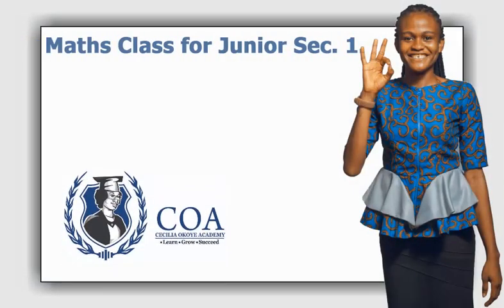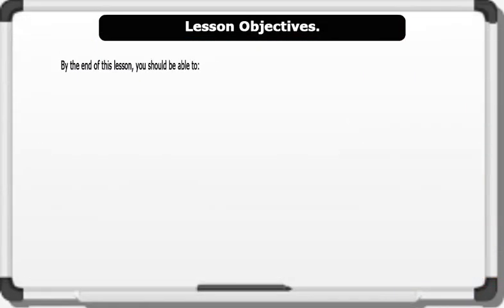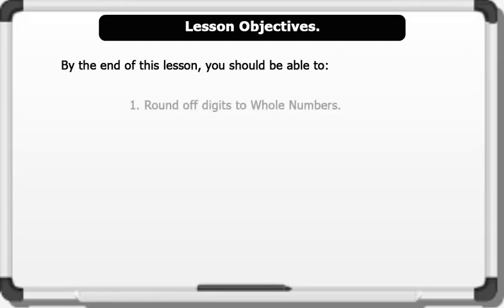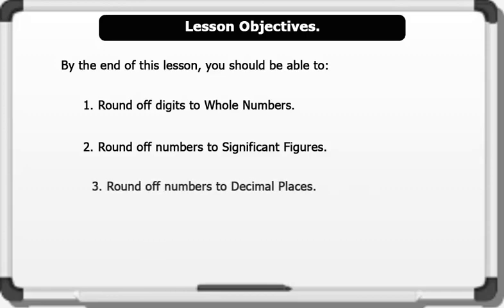Hello, our topic for today's lesson is rounding off numbers. The lesson duration is five minutes. By the end of this lesson you should be able to: one, round off digits to whole numbers; two, round off numbers to significant figures; and three, round off numbers to decimal places. Please pay attention as we go through the lesson together.